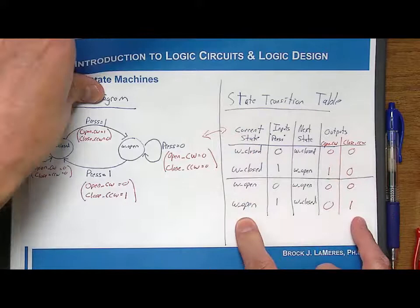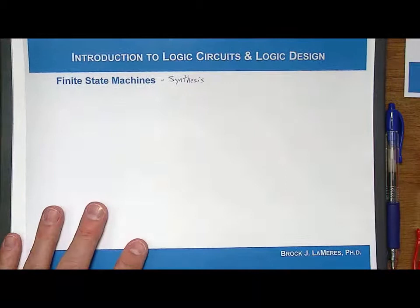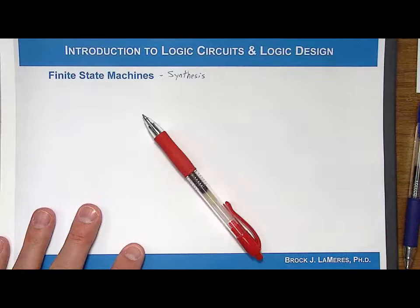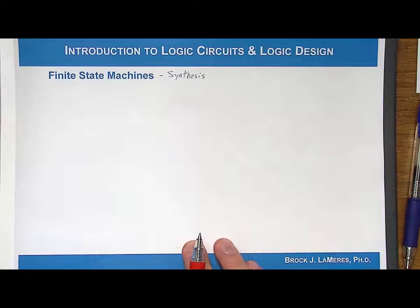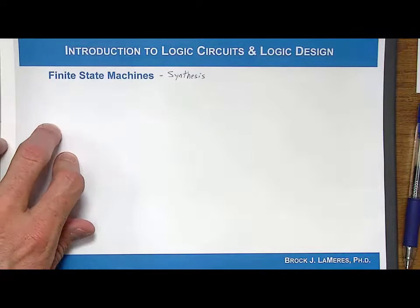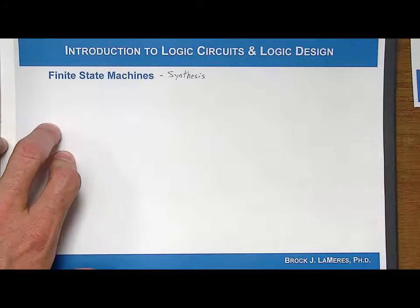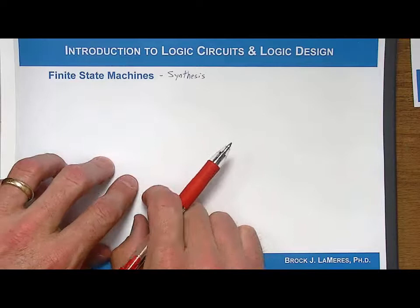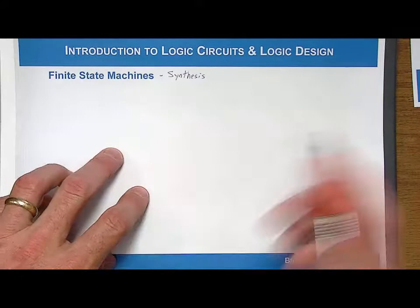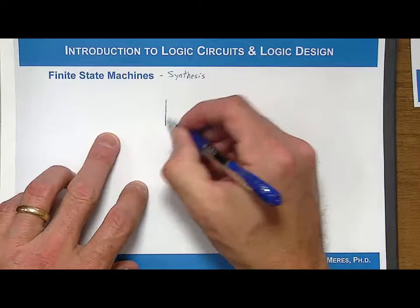The first thing we want to do is think about what are the components of a finite state machine. We need to store information about what the current state is. We're going to take all of those states from our state transition table and assign them some codes — ones and zeros — and hold on to them. The only thing we can hold information with is a D flip-flop. So the first block we're going to have is called state memory.